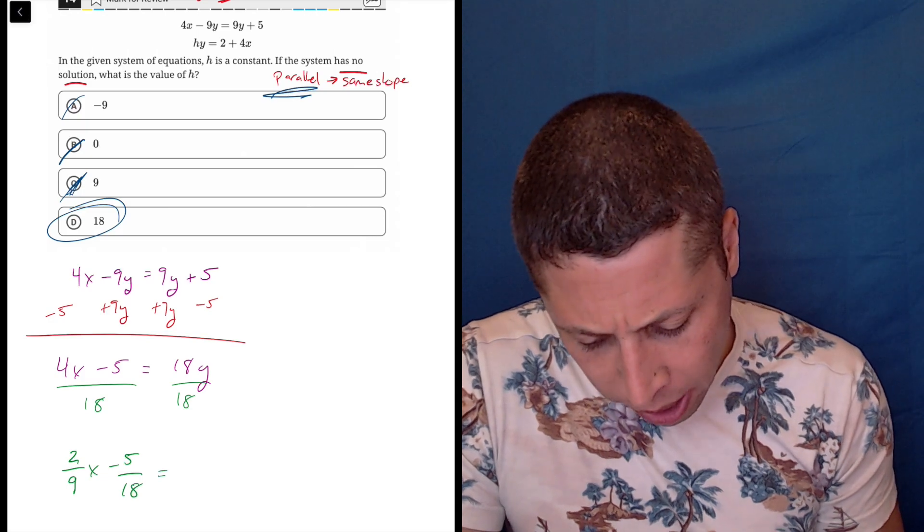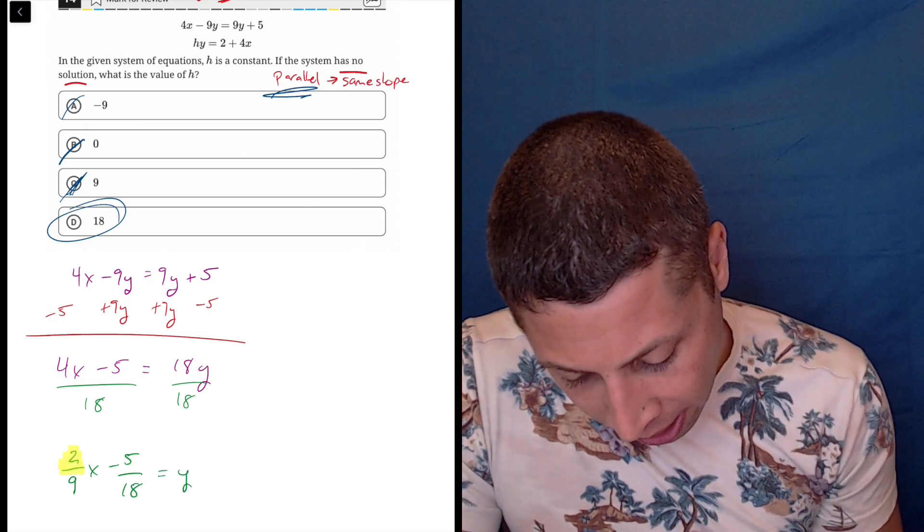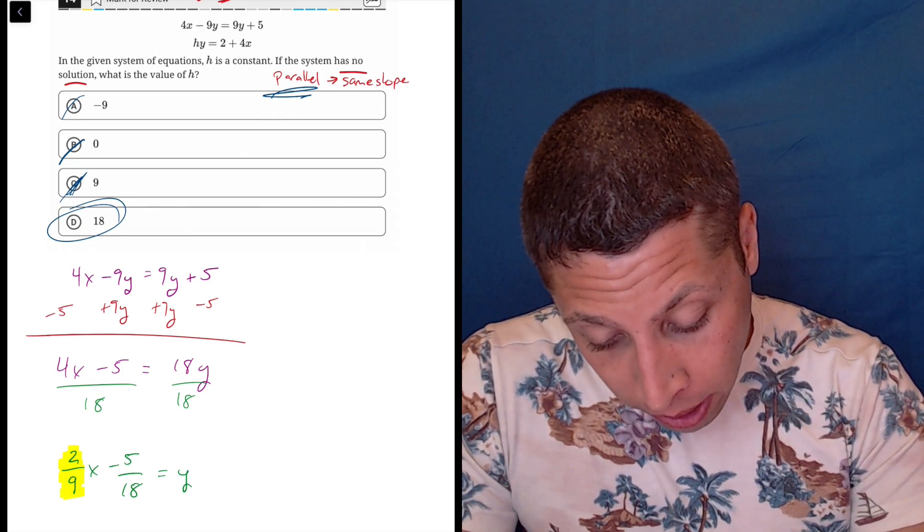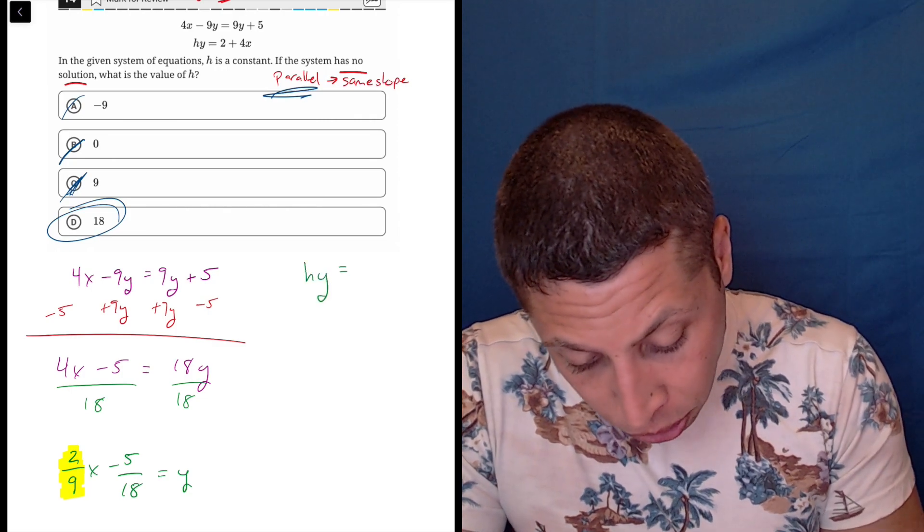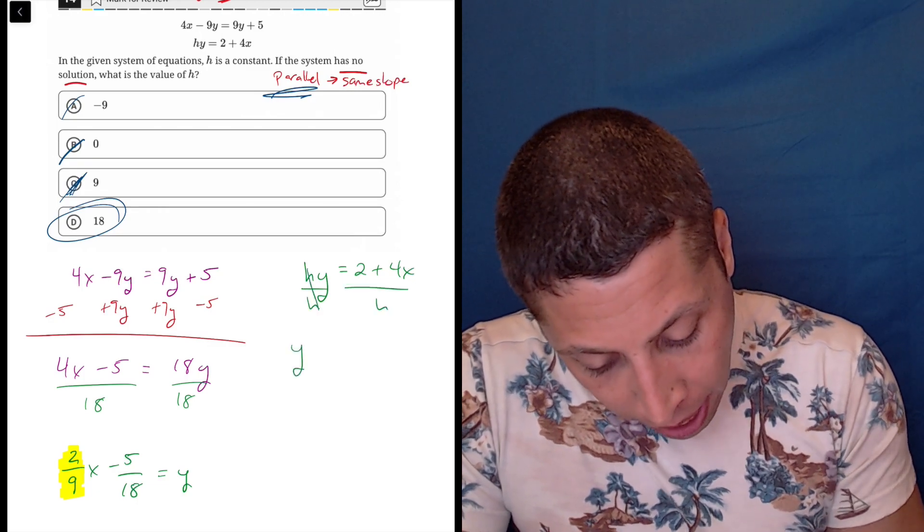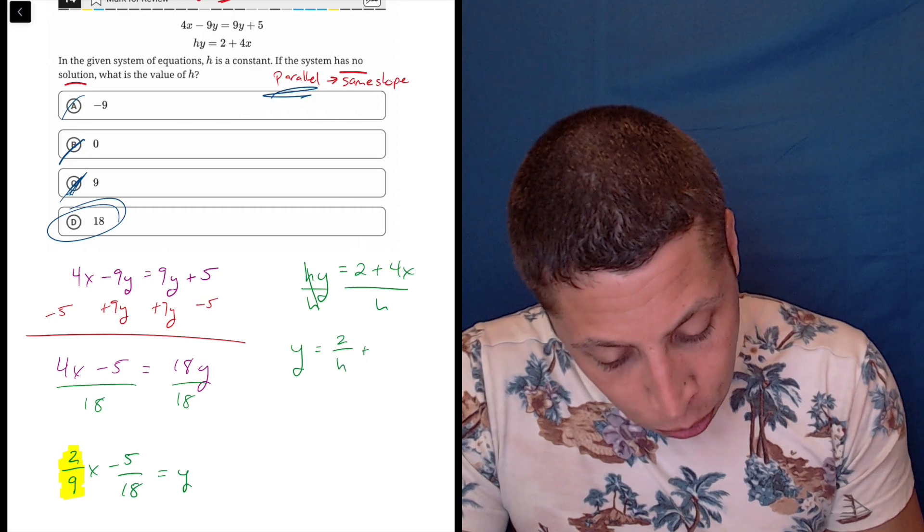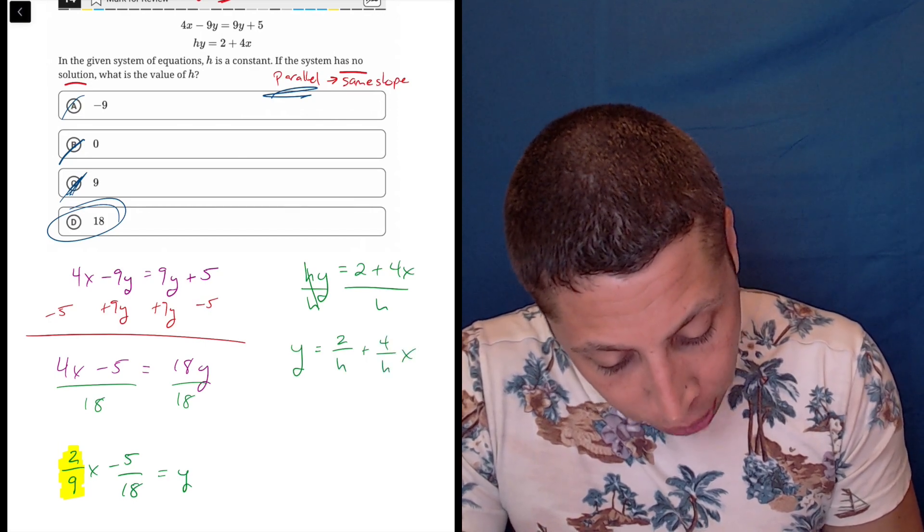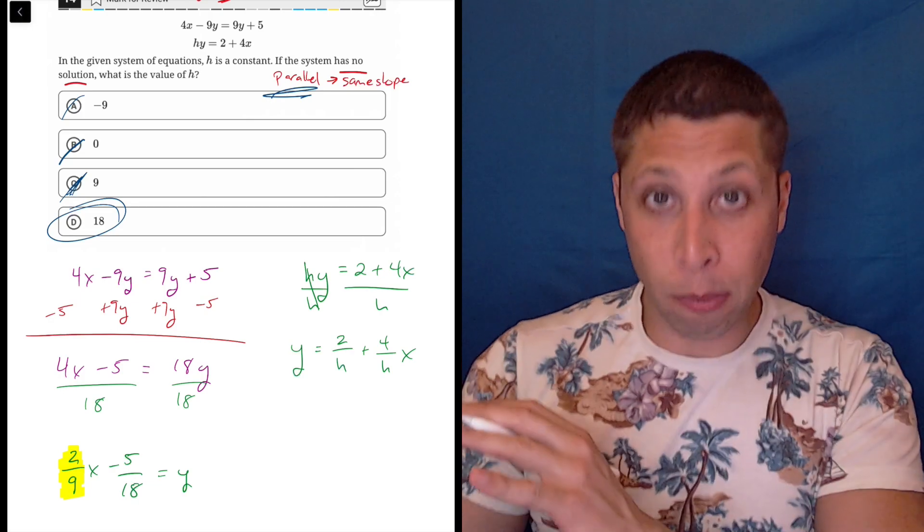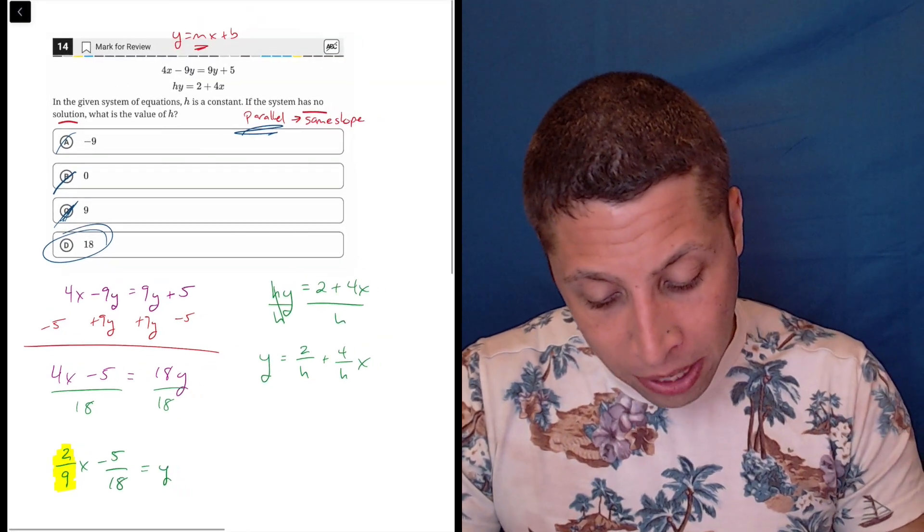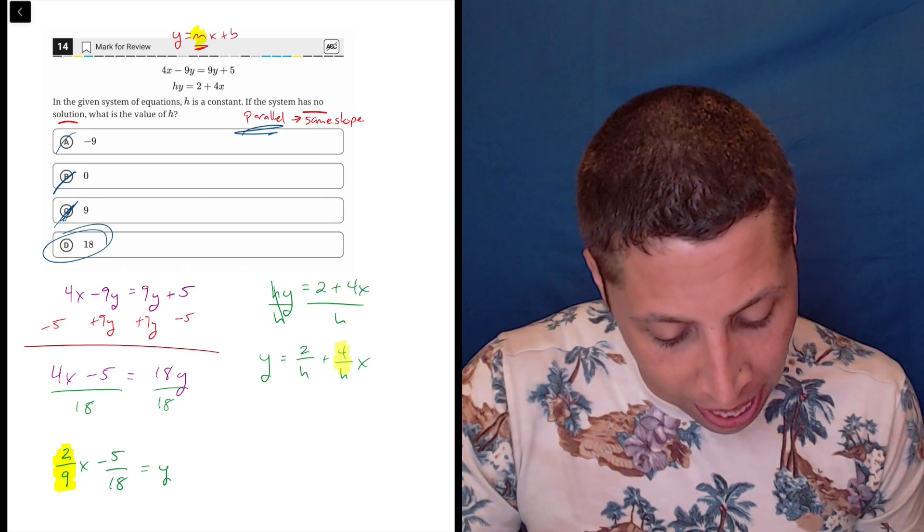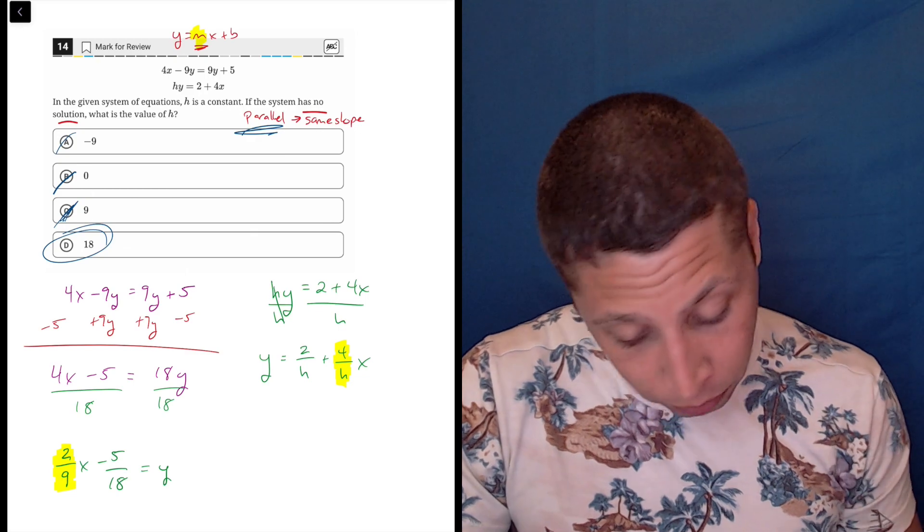And so the only part of this that really interests me is that now I'm going to have 4 over 18, which is 2 ninths x minus 5 over 18. So it's a little bit messy, but I don't care about that y-intercept. I only care about the slope, which is the number attached to the variable, the 2 ninths. So that's what matters. Now I have to do the same thing for the other equation, which is also close to y equals mx plus b, but not quite. I would need to divide by h. And if I do that, the y is now alone. And I'm going to split it up 2 over h plus 4 over h times x.